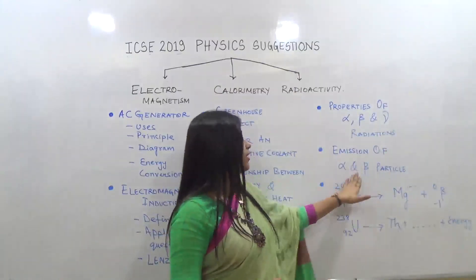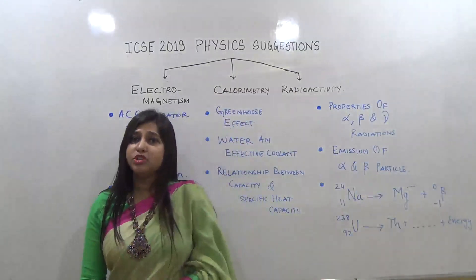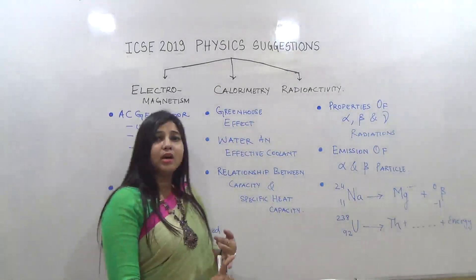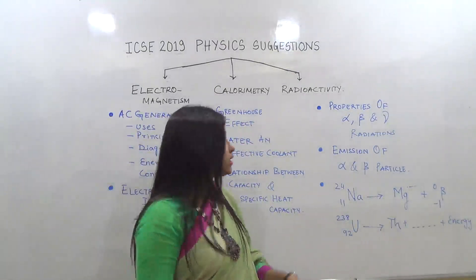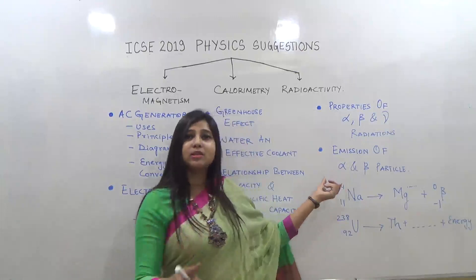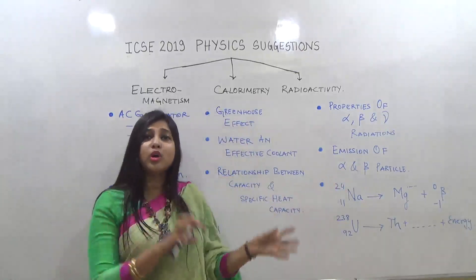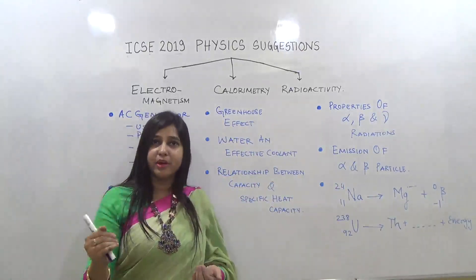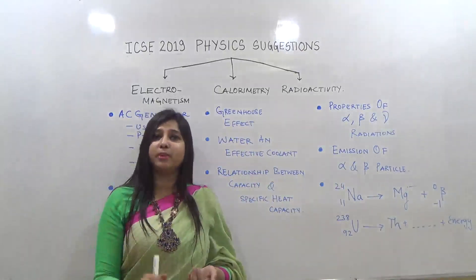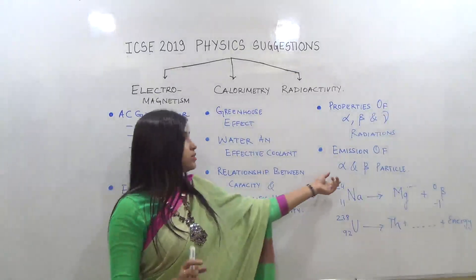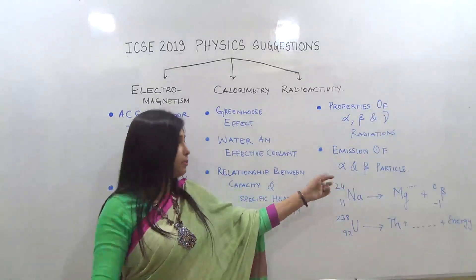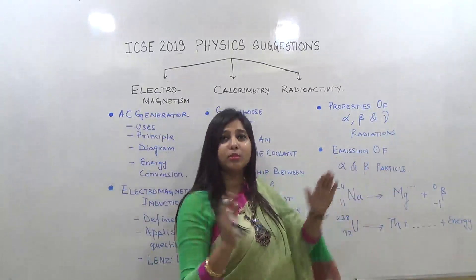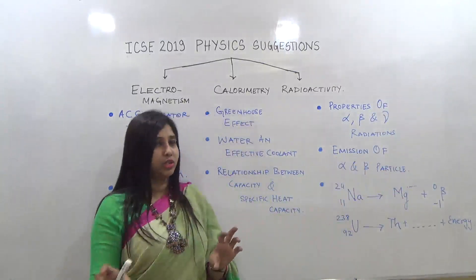Next is emission of alpha and beta particles. Alpha is helium, beta is electrons. When an alpha particle is emitted from a nucleus, the mass number decreases by 4 and atomic number decreases by 2. You need to know what changes happen when an alpha particle or a beta particle is emitted from a nucleus.